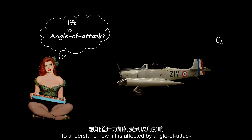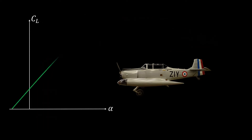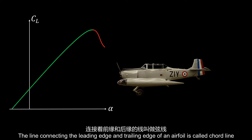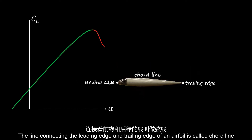To understand how lift is affected by angle of attack, you should know this graph well in aerospace. The line connecting the leading edge and trailing edge of an airfoil is called the chord line.